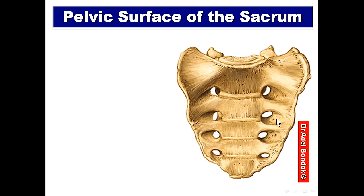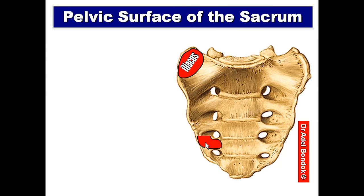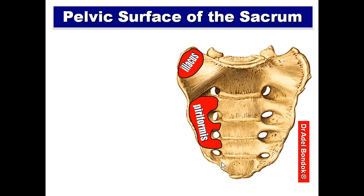The pelvic surface of the sacrum is related anteriorly to several structures. First, three muscles: iliacus attached to the ala of the sacrum, piriformis attached to the middle three pieces of the sacrum, and coccygeus attached to the last piece of the sacrum.